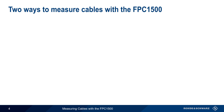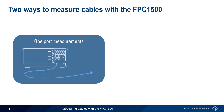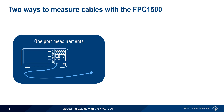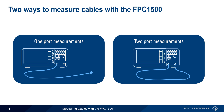There are two ways to measure cables with the VNA mode of the FPC-1500. The first is so-called one-port cable measurements, in which only one end of the cable is connected to the FPC. The other method is two-port measurements, in which both ends of the cable are connected to the instrument. We'll cover both of these methods in this presentation, starting with one-port measurements.